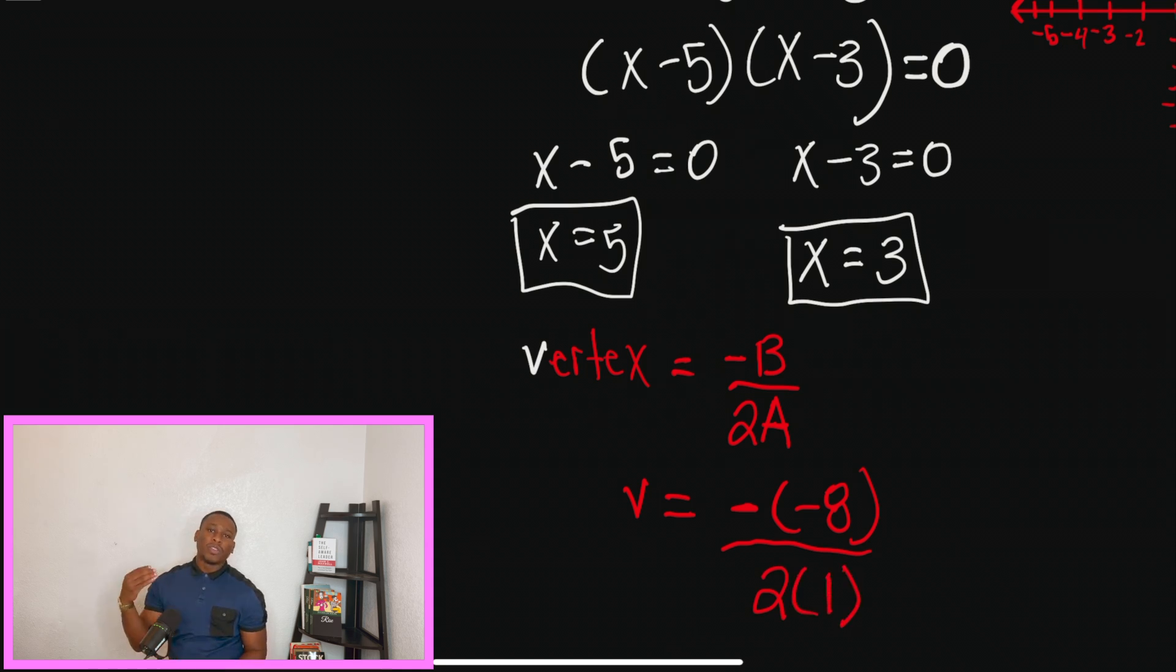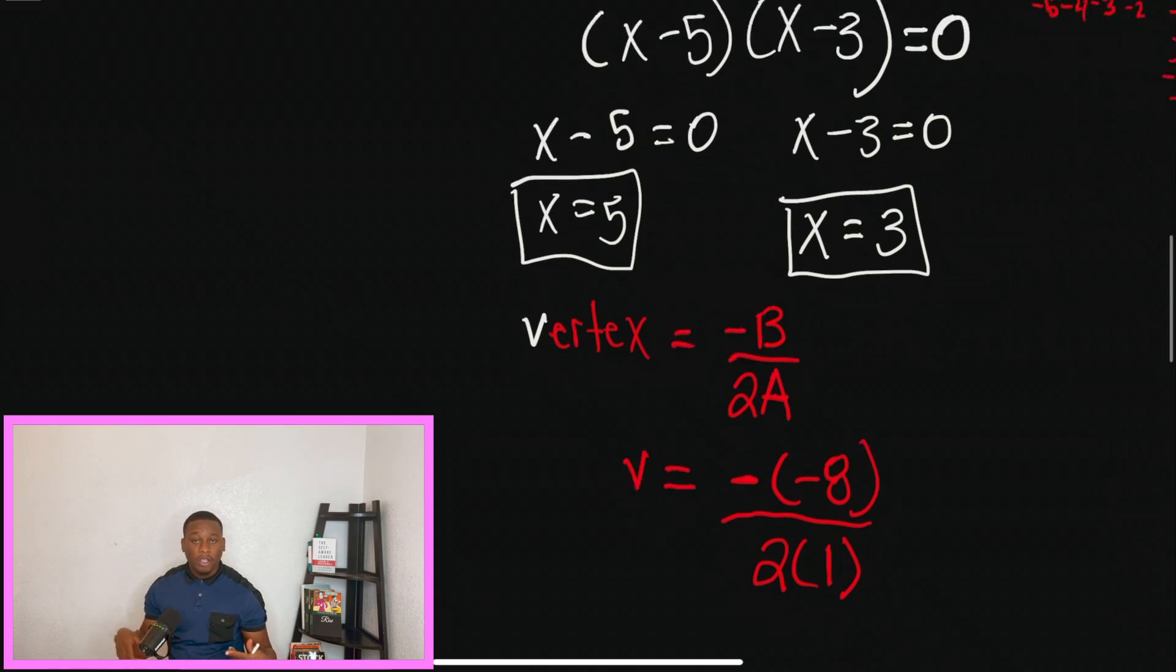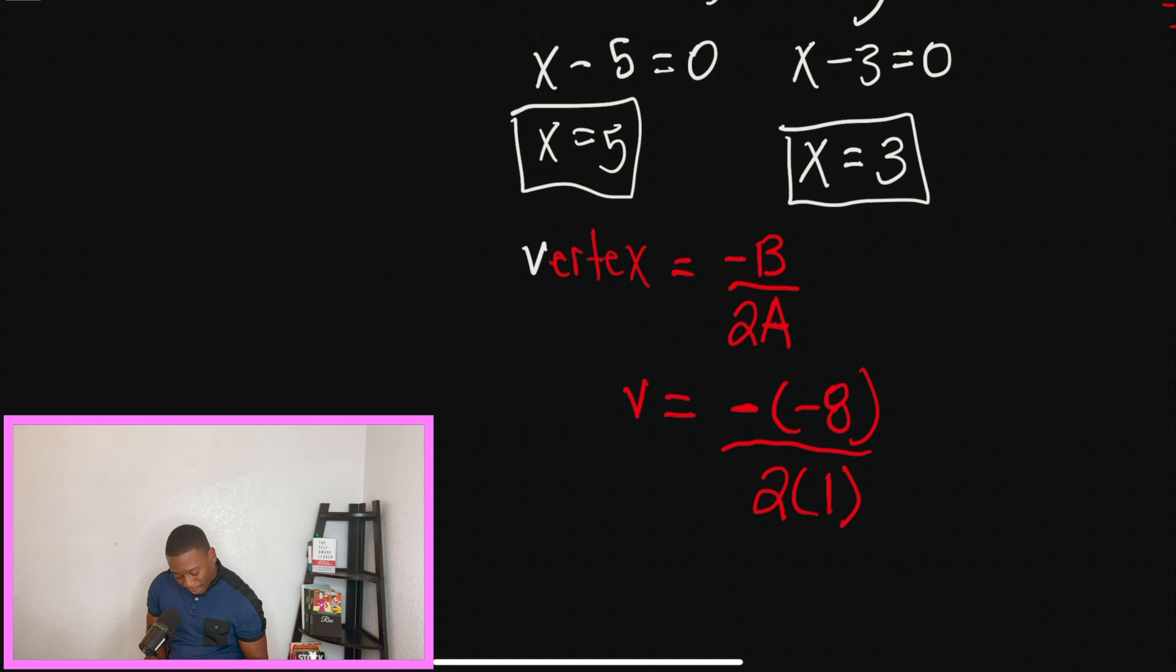And just remember that there is no number in front of x squared, so we assume and know that the value is 1. So at this step now, when we are subtracting a negative, it turns positive. So our vertex is going to be 8 over 2, which equals positive 4.